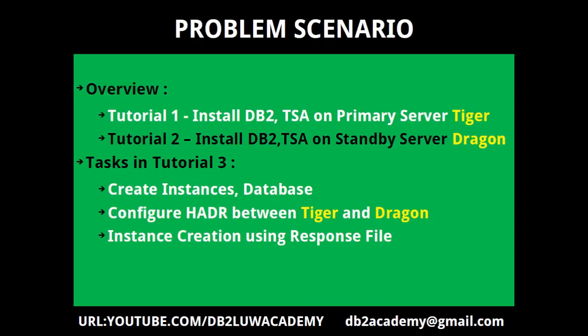This is the overview and the tasks we are going to perform in tutorial 3. In tutorial 1 we installed the DB2 product and TSA on the primary server, machine name 'tiger', a Red Hat system. In tutorial 2 we installed DB2 and TSA on the standby server, machine name 'dragon'. Software versions are all the same: DB2 11.1.4.4 and RHEL 7.6. In tutorial 3 we want to create instances and one HA database, configure it as HADR. The TSA automation will be covered in tutorial 4.